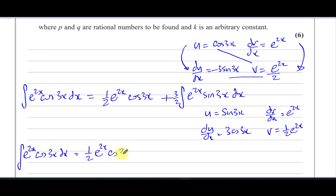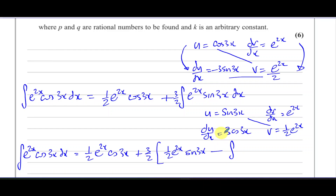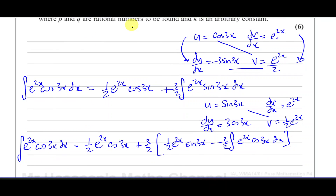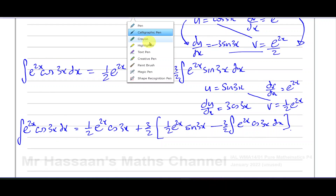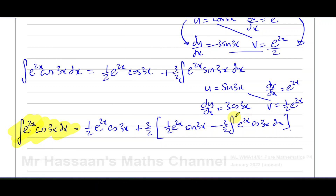Applying integration by parts again: e^(2x)·cos(3x) dx = (1/2)e^(2x)·cos(3x) + (3/2) times [u·v minus integral of v·du/dx], which is (1/2)e^(2x)·sin(3x) minus the integral of (1/2)e^(2x)·3cos(3x) dx. That last integral becomes minus (9/4) times the integral of e^(2x)·cos(3x) dx. Notice that this is the same integral we started with — this is the key in this type of question.